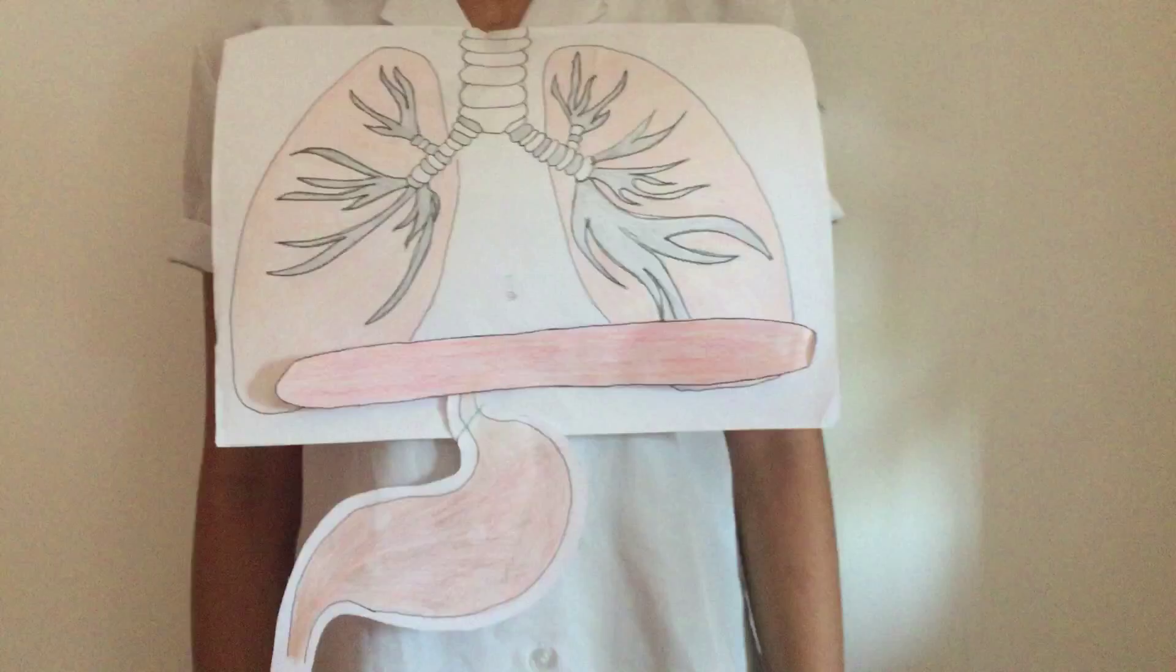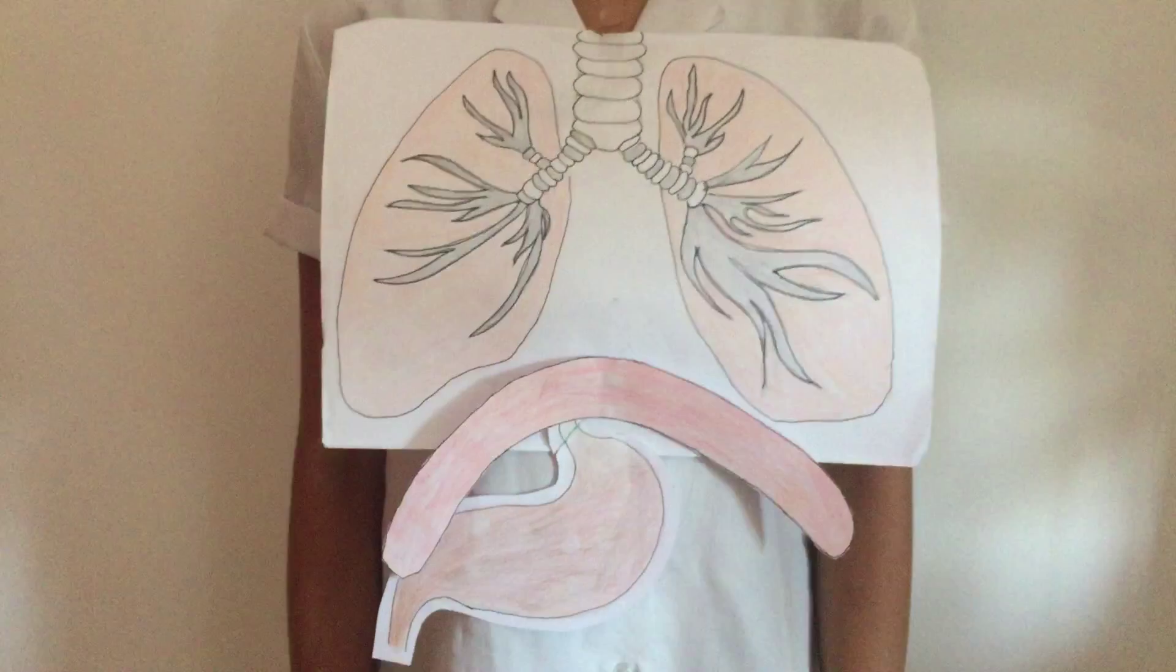When the involuntary contractions occur, the diaphragm pulls down the lungs abruptly, causing a sudden rush of air to pass through the voice box. But in actual fact, the voice box closes suddenly, resulting in the hiccup sound.